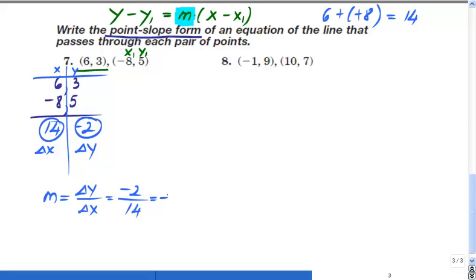Negative 2 over 14, you can simplify, divide each one top and bottom by 2. That would be 1 over, 14 divided by 2, 7. Negative 1/7. Okay, now I did that. I need the formula: y minus y1 equals m times x minus x1 in the parenthesis, where m is my slope. My slope is here.